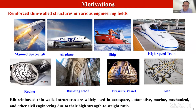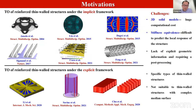Rib-reinforced shell structures are used in aerospace, automotive, marine, mechanical, and civil engineering. However, due to the complexity of the topology optimization problem for reinforced shell structures compared with topology optimization in 2D and 3D flat space, there are only a few studies for rib-reinforced shell structure topology optimization. Most existing work is based on implicit topology optimization methods.